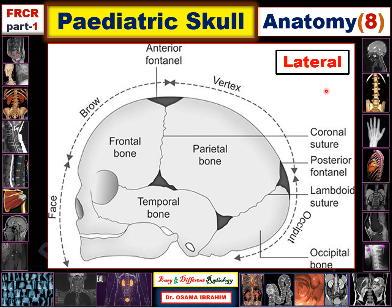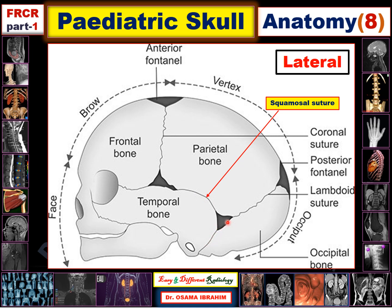In the lateral view of the skull, the frontal bone is anteriorly separated from the parietal bone by the coronal suture. The occipital bone posteriorly is separated from the parietal bone by the lambdoid sutures. Additional sutures arise from the lambdoid and pass anteriorly — these are called the squamosal sutures, separating the parietal bone from the temporal bone. There are also sutures continuous with the lambdoid inferiorly and anteriorly, called the occipitomastoid sutures.